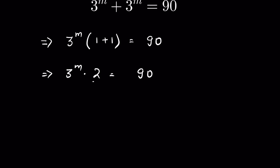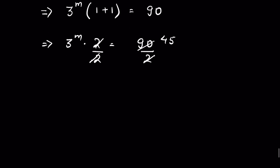Now let's divide both sides by 2. So this 2 and this 2 get cancelled. 2 times 45 is 90. So we have 3 to the power m is equal to 45.